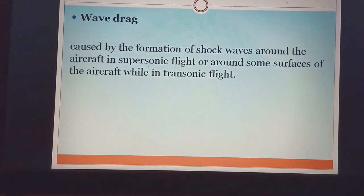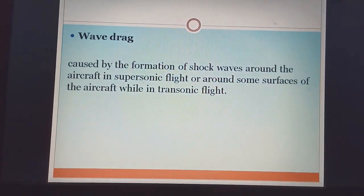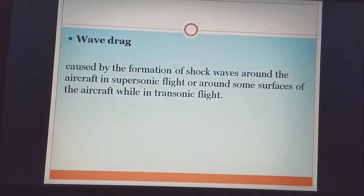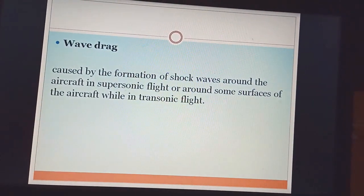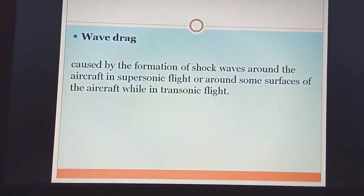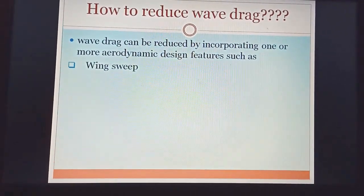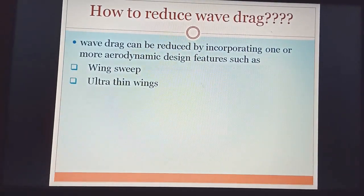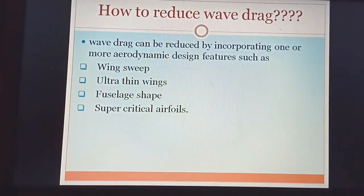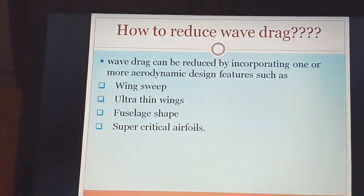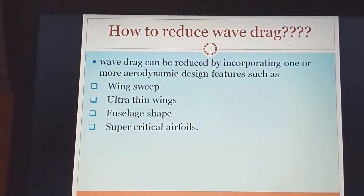Now, wave drag. Wave drag is caused by the formation of shock waves around the aircraft in supersonic flight, and around some surfaces of the aircraft while in transonic flight. It occurs due to the formation of shock waves — which form at high Mach numbers, when Mach number exceeds one (supersonic). To reduce wave drag, you can use: (1) wing sweep (swept-back wing), (2) ultra thin wings, (3) optimized fuselage shape, and (4) supercritical aerofoil.